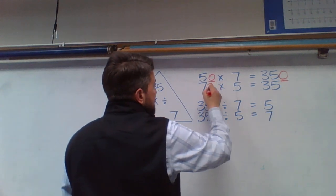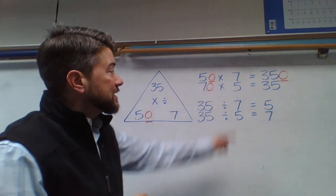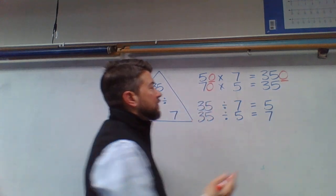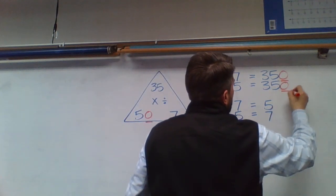If I have 70, or 7 tens times 5, 7 tens times 5 would also give me 350.